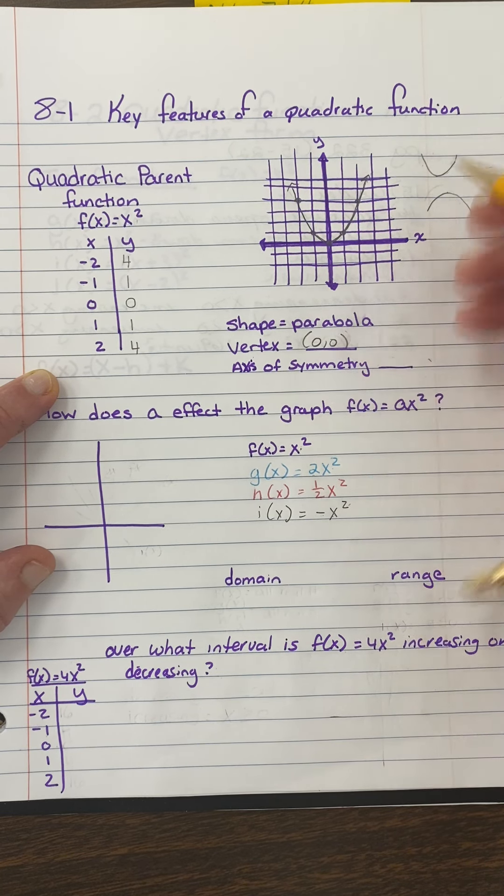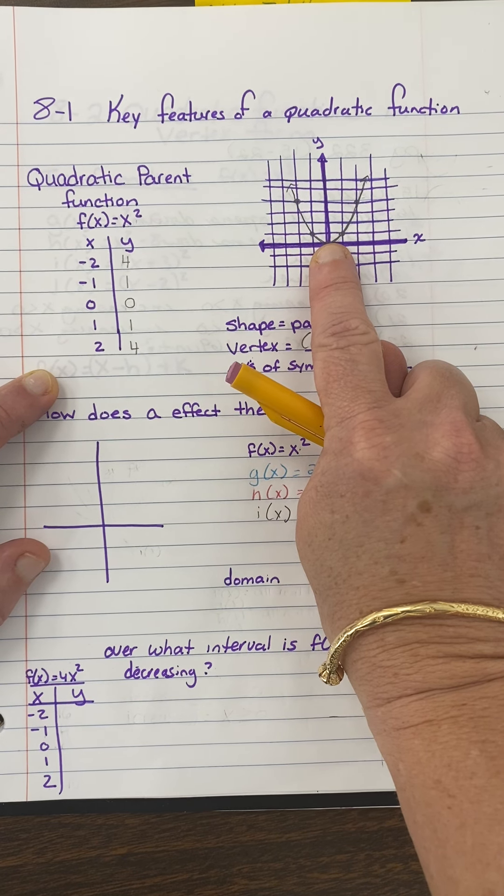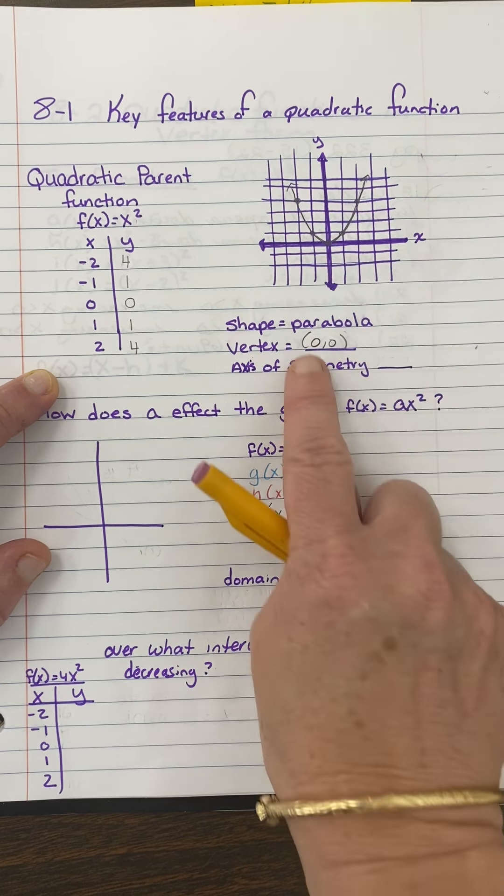So this is the parent function. And I know we've done lots of transformations before where we slid them left, right, up, down. Today we're going to talk about what a does to the parent function.